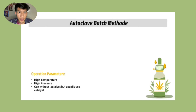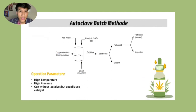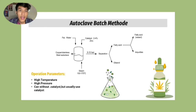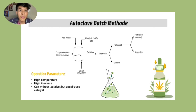Now let's look at the operation parameters of the autoclave batch method. This process uses high temperature and high pressure. The temperature of steam is about 150 to 175 degrees Celsius, and the pressure is about 1,138 kilopascals. The catalysts used are zinc, magnesium, or calcium oxide. This process can be run without a catalyst, but using a catalyst is preferred for better results.